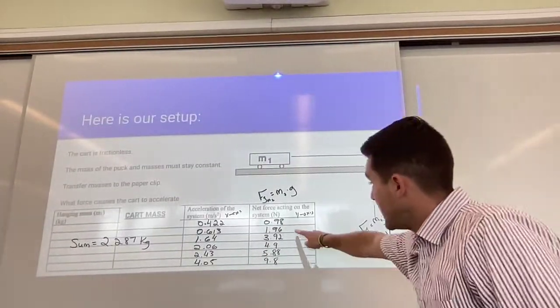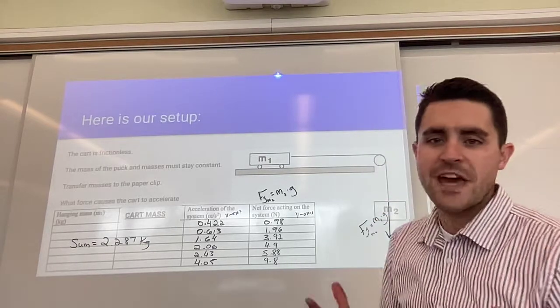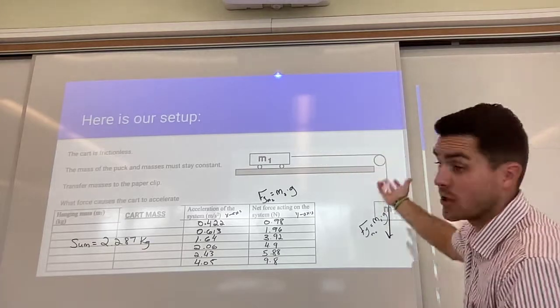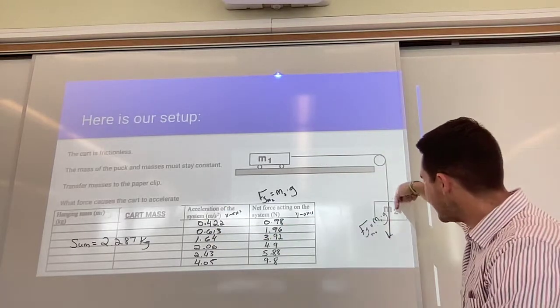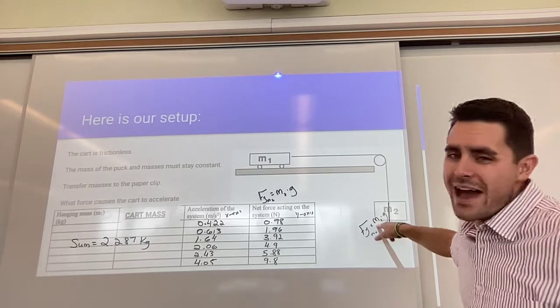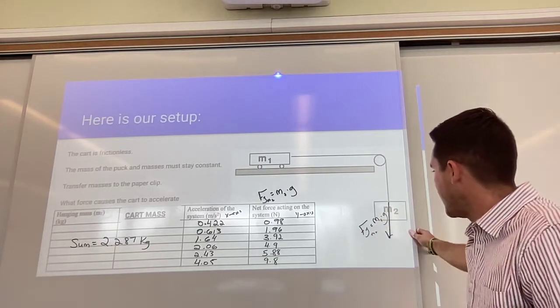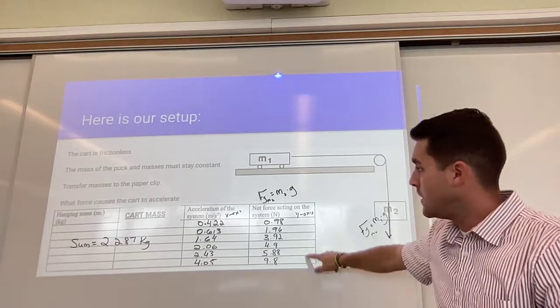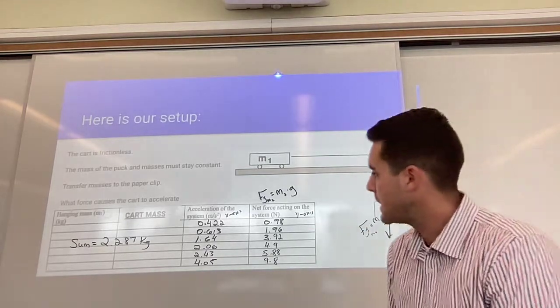The data is net force of the hanging mass. Here's my hanging mass. We said this is the force that pulls the whole system and causes the acceleration. This force is Fg of mass 2. So I would take whatever mass I had hung, multiply it by 9.8 because that's g on this planet, and that spits out my net force for the system.